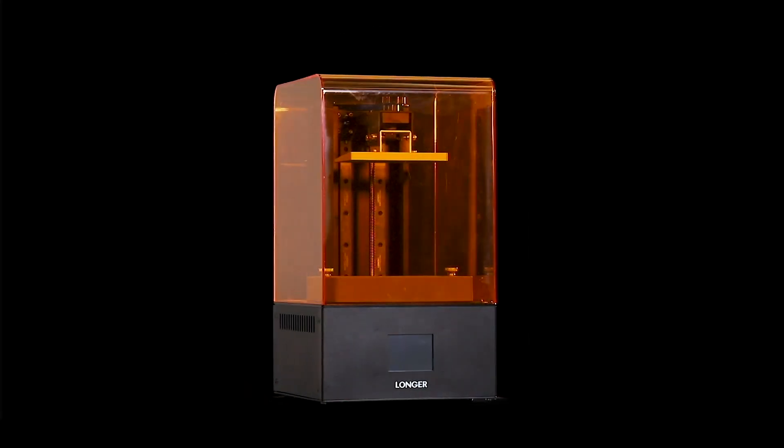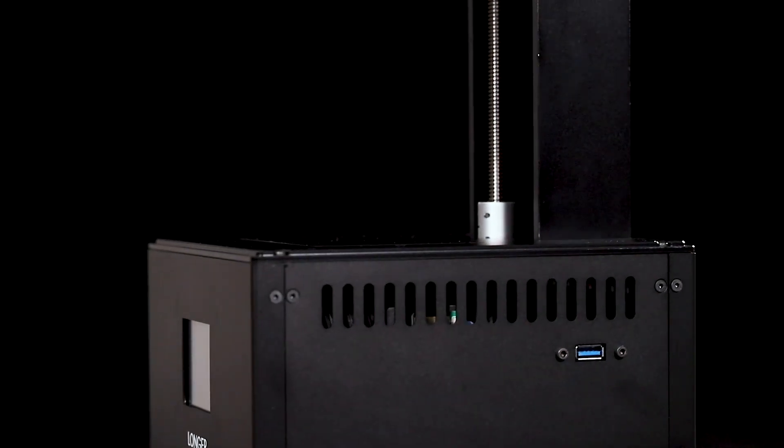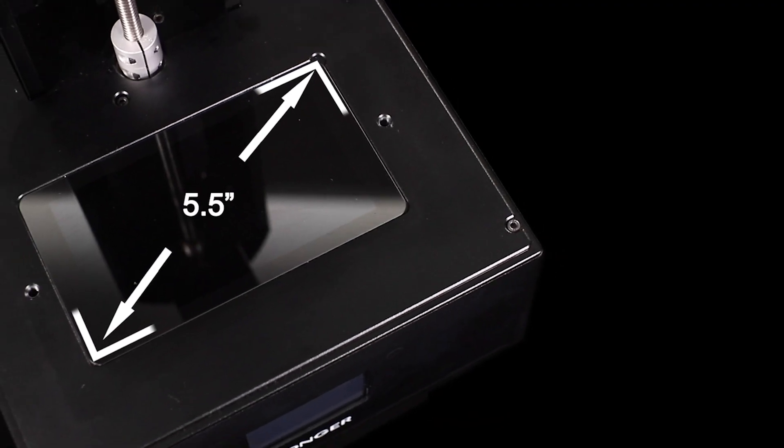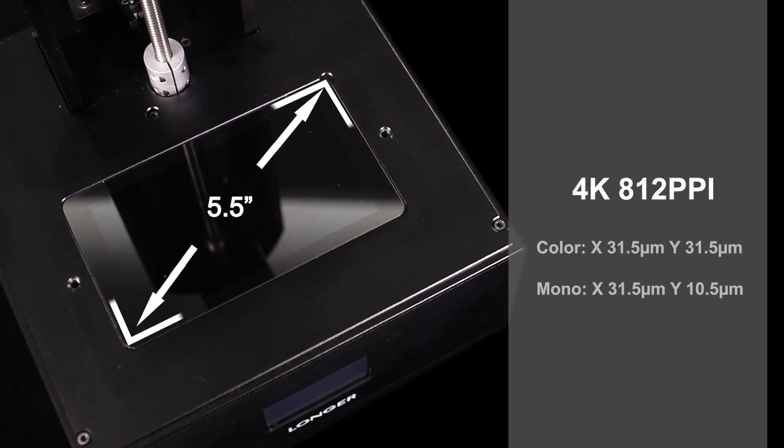Orange 4K is built by an all-metal body and dual linear guide, which is more stable and reliable. Orange 4K is integrated with a 5.5-inch 812 PPI 4K LCD screen.